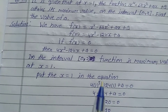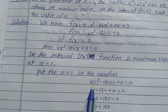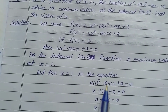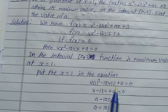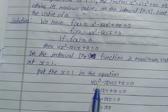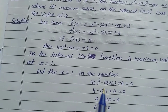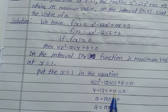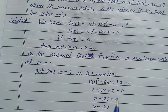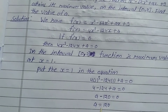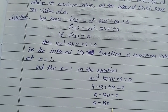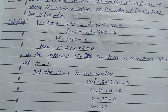Putting x equal to 1: 4 times (1)³ minus 124 times 1 plus a equals 0, so 4 minus 124 plus a equals 0, giving a minus 120 equals 0, therefore a equals 120. That is the solution.